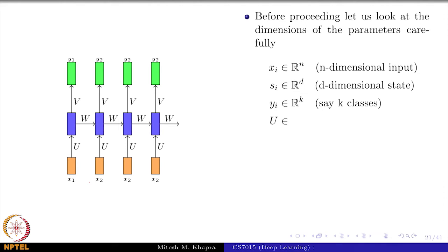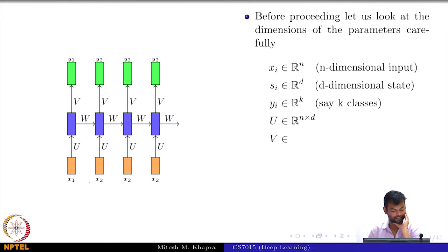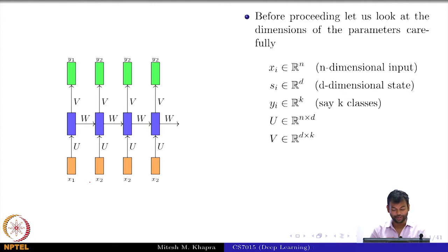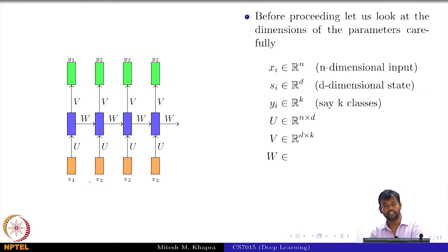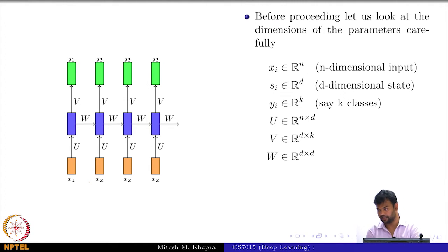So now, what is U? What is V? V is d×k — I am asking, is it d×k? And W is d×d. Everyone sure? These are the dimensions.